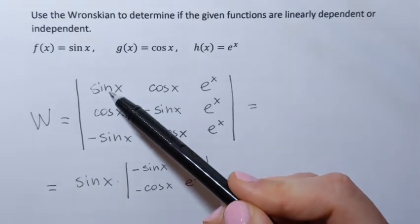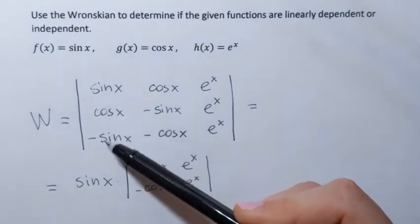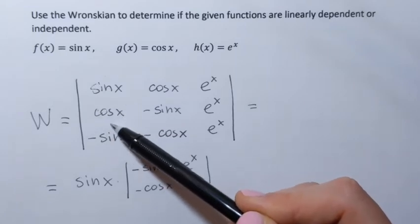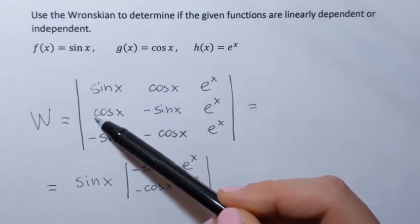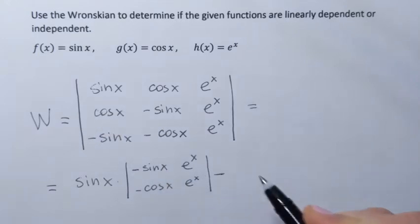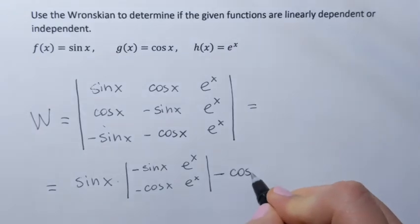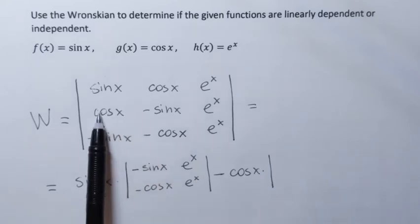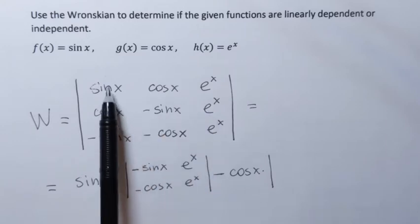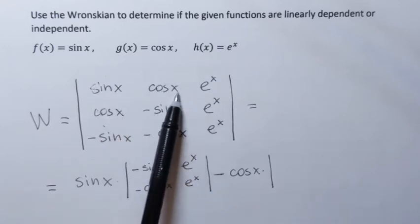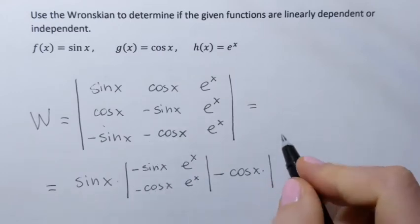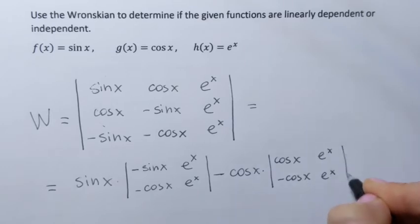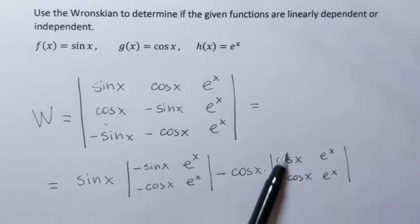Next I move to the next element in the first column. As I go over the elements in the first column I will be alternating signs, so now I will be subtracting the following product: cosine of x multiplied by the determinant of the following matrix. I cross out the second row and the first column, and the remaining elements form the smaller matrix: cosine x, e to the x, negative cosine x, e to the x. I need to multiply that cosine by the determinant of this matrix.